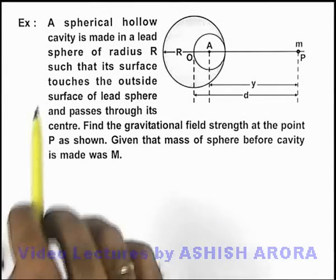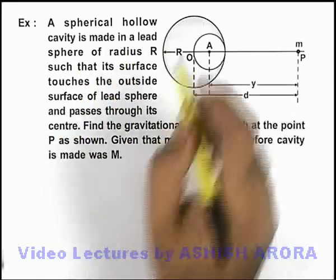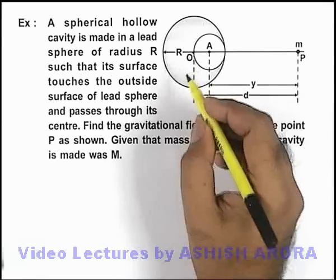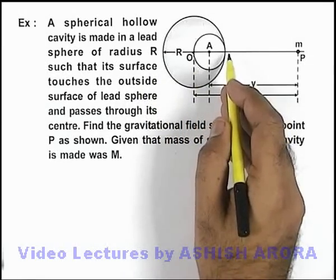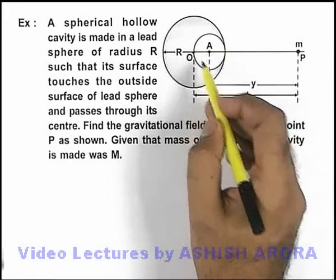In this example, we are given that a spherical hollow cavity is made in a lead sphere of radius R, such that its surface touches the outside surface of the lead sphere. That means here the cavity radius is R by 2.